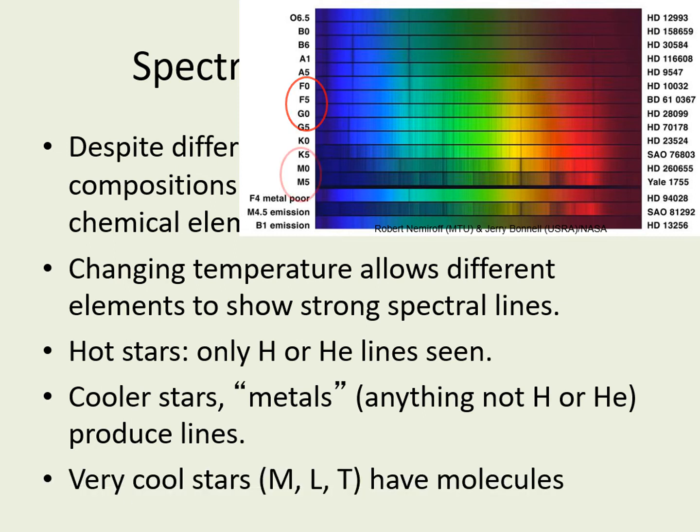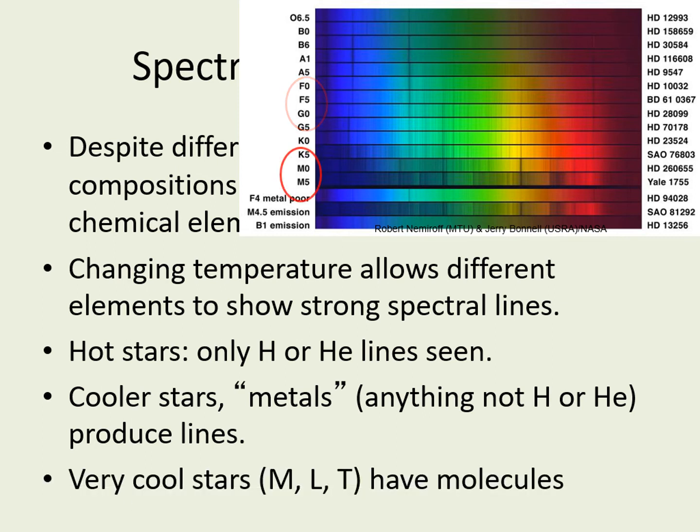In the very coolest stars, it's even cool enough for atoms to start combining into molecules, so we see absorption from these as well. That's what gives the dense bands of absorption you can see in the M5 star.